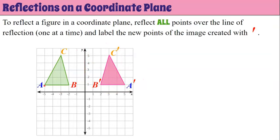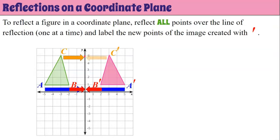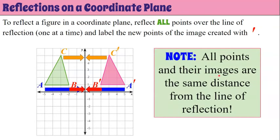Let's make note. Here is point A and here is its reflected image A prime. A is five units from the y-axis, and A prime is also five units from the y-axis — they are the same distance from the line of reflection. B is two units, and B prime is also two units. C is three units, and C prime is three units. So all points and their images are the same distance from the line of reflection.